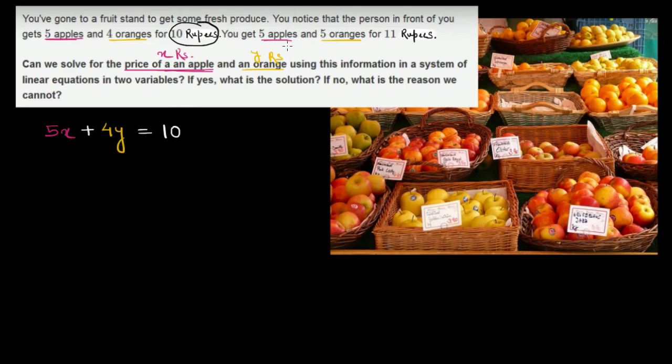For the second condition, when I bought 5 apples and 5 oranges, the price is 5x plus 5y. Together they equal 11 rupees. So we have 5x + 5y = 11.